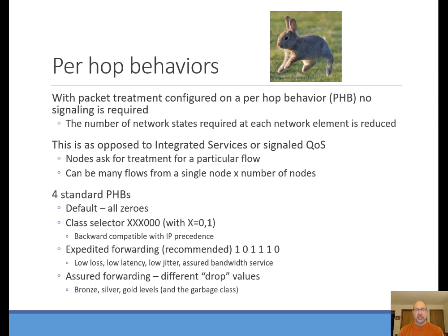As we said, differentiated services is what we call provisioned QoS. You set up classes on a router — they're static, and the router decides what to do based on those policies. This is as opposed to integrated services, which is the signaled QoS we mentioned at the beginning of this video. Signaled QoS is different because the hosts are asking for some kind of treatment for their particular traffic at the time the traffic is being generated.